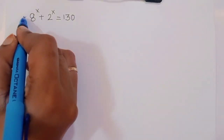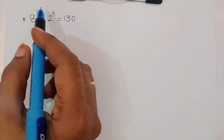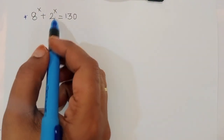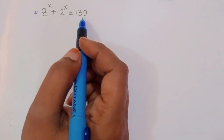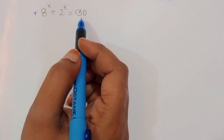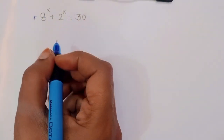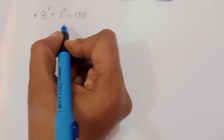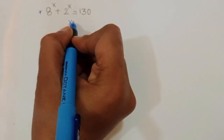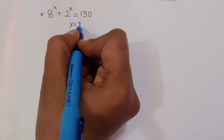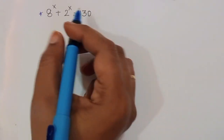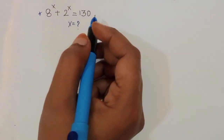The question is given: 8 power x plus 2 power x is equal to 130. We have to find out the value of x here.